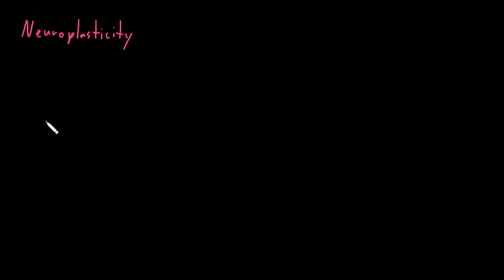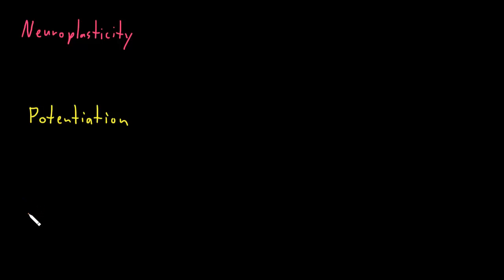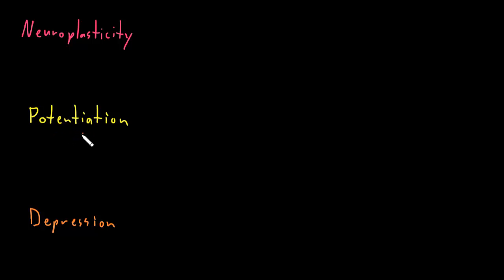Neuroplasticity goes in both directions. The strength of information flowing through a particular part of the nervous system can increase, which we call potentiation. Or the strength of information flowing through parts of the nervous system can decrease, which we call depression. The use of the word depression in this context shouldn't be confused with the emotional state or psychiatric disorder of depression. Here it refers to depressing the responses of cells to other cells in the nervous system versus potentiating the responses of cells.